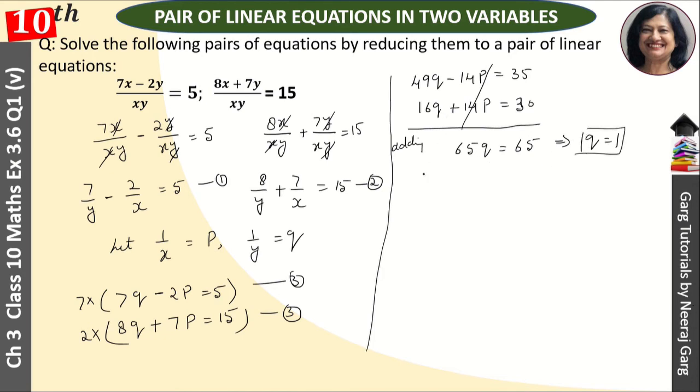Now we will put this q value in equation 3. Putting in 3, we can use equation 3 or 4. So 7q, we put q equals 1, minus 2p that is equal to 5. So minus 2p is equal to 5 minus 7 is equal to minus 2, so p is equal to 1, right?